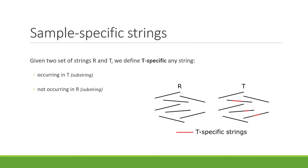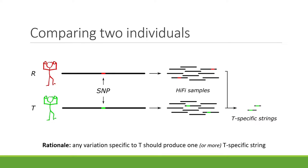Given two sets of strings r and t, we define a t-specific string as any string that occurs in sample t as a substring of some read, but doesn't occur in sample r as a substring of any read. To understand why we introduced this notion, consider this simple example. We have two individuals r and t, and we know there is a SNP: the red allele in r and the green allele in t. If we sequence these two individuals, some reads in the green sample will cover the green allele. So if we try to find t-specific strings, we will find substrings of reads in t that cover the green allele, since the green allele is specific to t and cannot be found in r. The rationale is that any variation specific to the individual we are interested in should produce one or more strings specific to that individual.